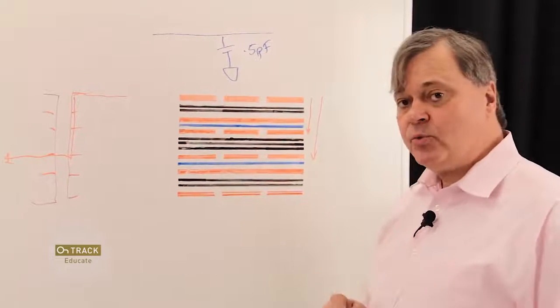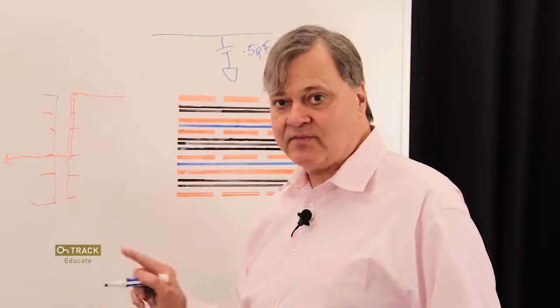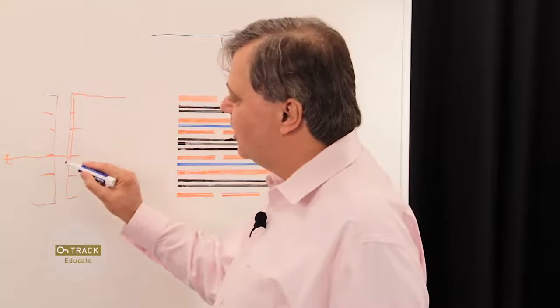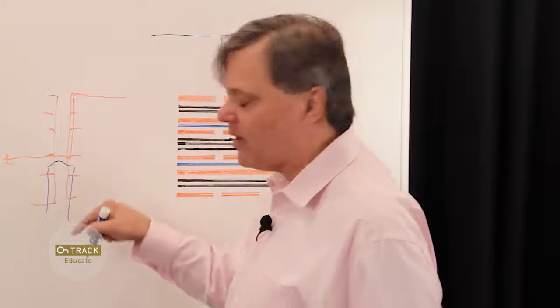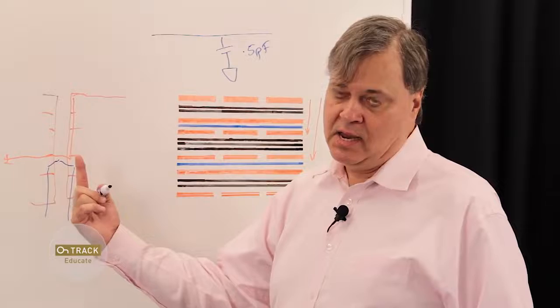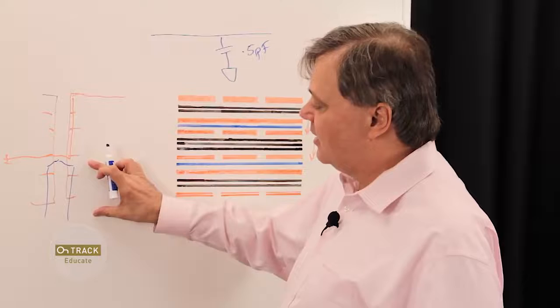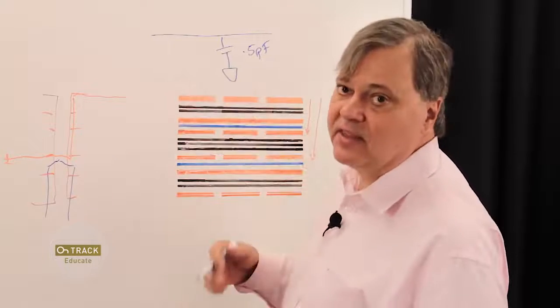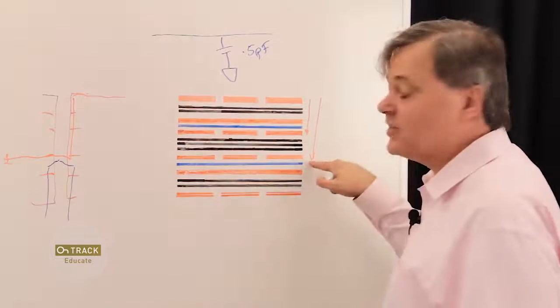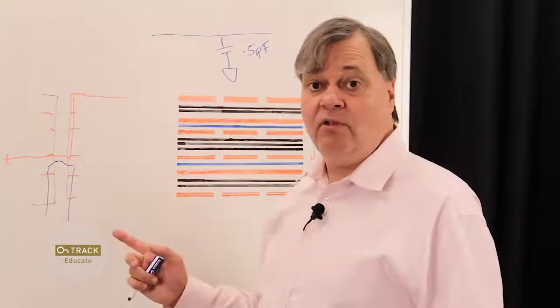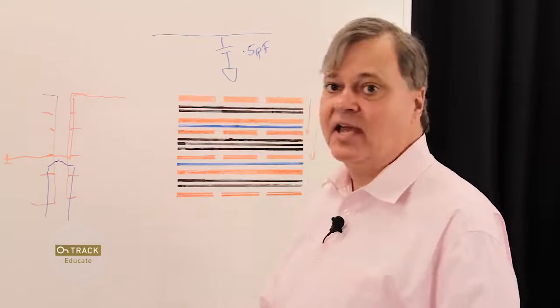So the approach we use when using through-hole vias on high-speed design is we back drill this via barrel to remove it. So we would take a drill that is slightly larger in diameter than the via barrel, and we would drill this material out. Now, when you do this, this isn't adding a lot of extra technology, in that we don't have to do any laser drilling to plate vias that are difficult to get to. We simply use all through-hole vias, most cost-effective approach, and then back drill those particular vias as necessary.